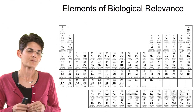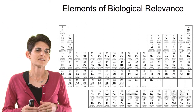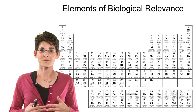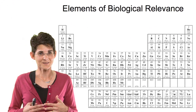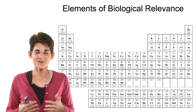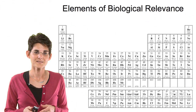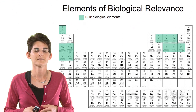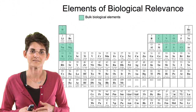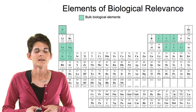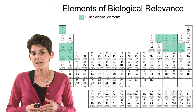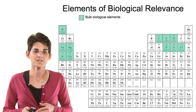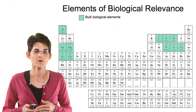Now let's take a look at the rest of the periodic table. If organic chemistry is carbon-based and inorganic chemistry is non-carbon based, we have a lot of elements to deal with in inorganic chemistry. Here's our periodic table of the elements. We'll start with the bulk biological elements — things like carbon, hydrogen, oxygen, sulfur, and the metal ions like sodium, magnesium, potassium, calcium, and of course hydrogen. Those are the bulk metals or bulk elements.